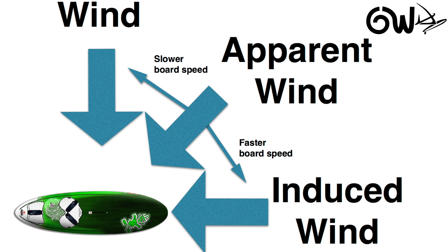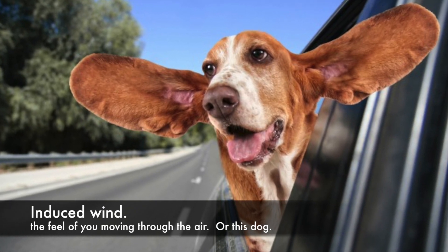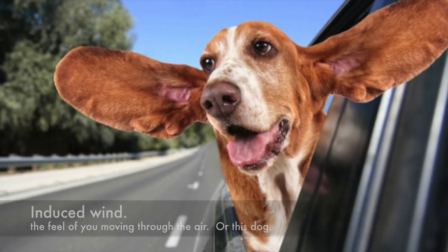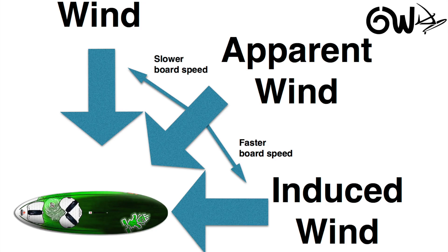We have the wind in this diagram indicated by the top arrow. We also have the induced wind indicated from the arrow coming from the front of the board. The induced wind is what you feel as you move through the air, a bit like sticking your head out of the car window. When you combine the induced wind and the real wind, you get the feel of the apparent wind somewhere between the two.